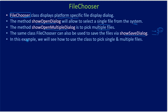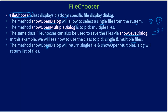In this example we will see how to use the class to pick single as well as multiple files. We will construct a FileChooser and experiment with showOpenDialog, and also make a call to showOpenMultipleDialog. We have two separate buttons: button one is for single file, button two is for multiple files. showOpenDialog returns a single File, while showOpenMultipleDialog returns a list of files that you iterate over.